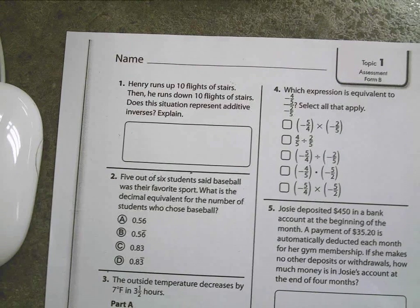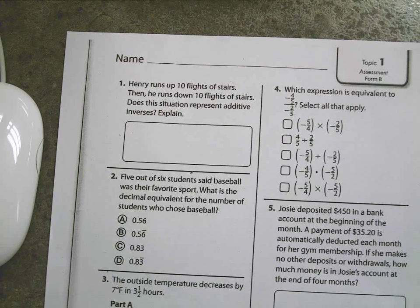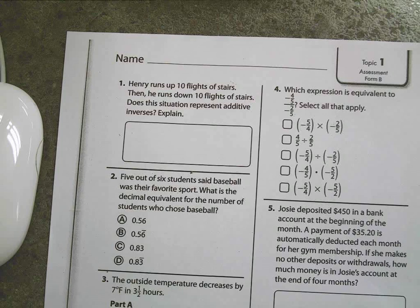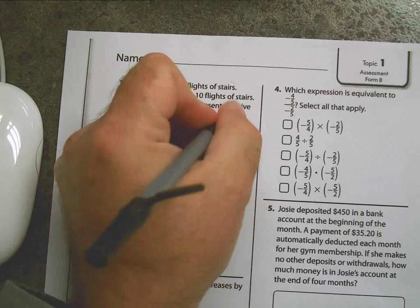Okay, question number one. Henry runs up ten flights of stairs, then he runs down ten flights of stairs. Does this situation represent the additive inverse?